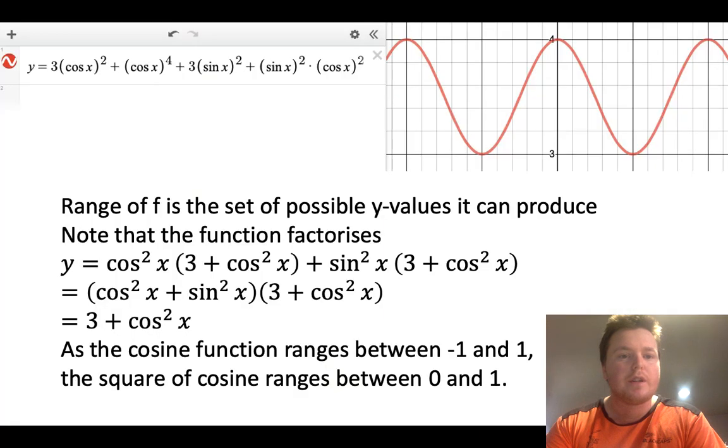The second question, we had this random function made up of cosine squareds, sine squareds and all that sort of stuff, and the range of values for F is the set of y values that the function outputs.